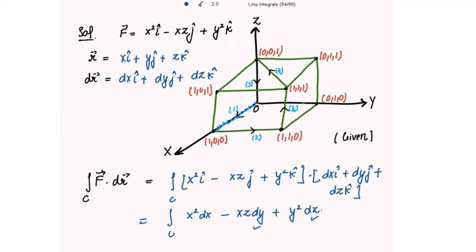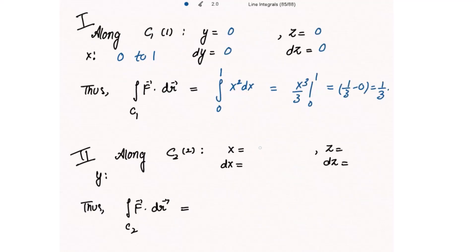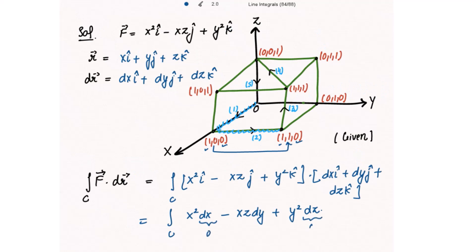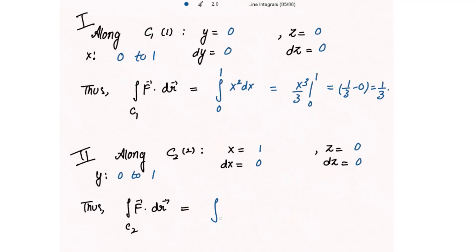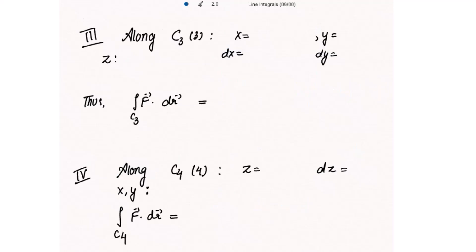Along path C2, x is constant at one and z is constant at zero. y varies from zero to one. Since x and z are constant, dx is zero and dz is also zero. The integrand reduces to minus xz dy, where x is one and z is zero, making it completely zero. So the integral along C2 is zero.